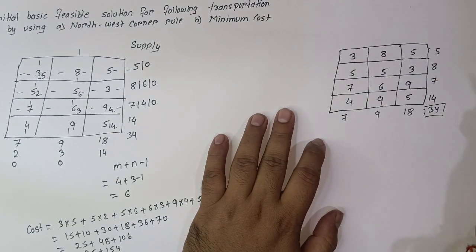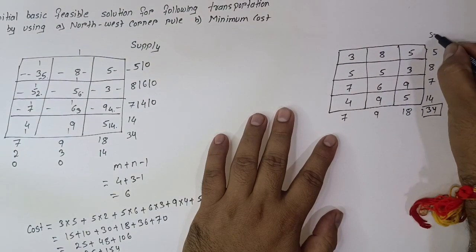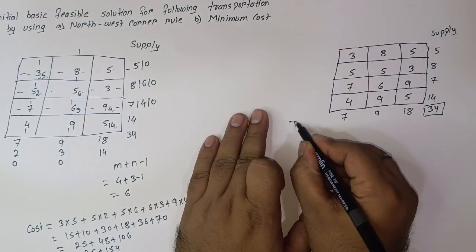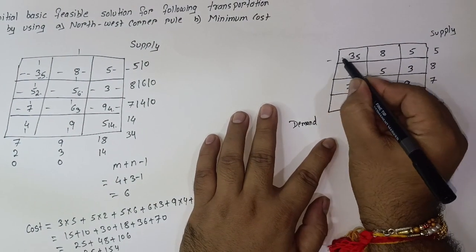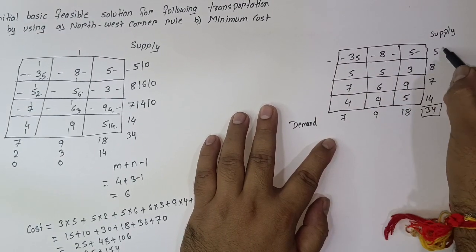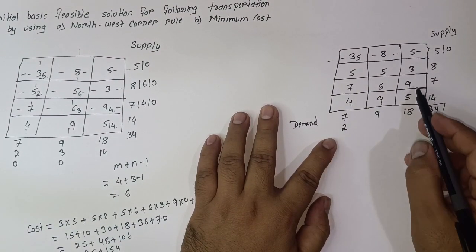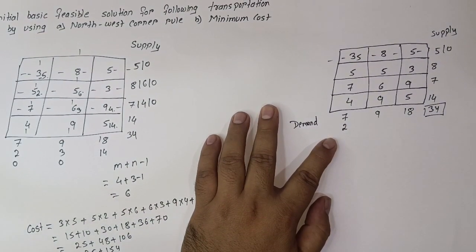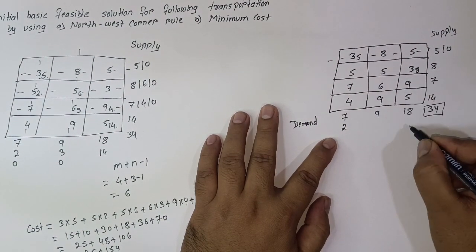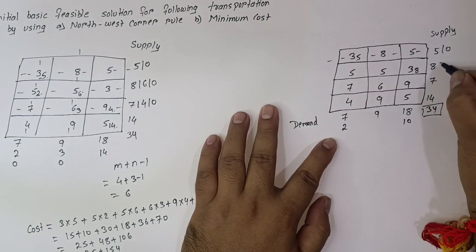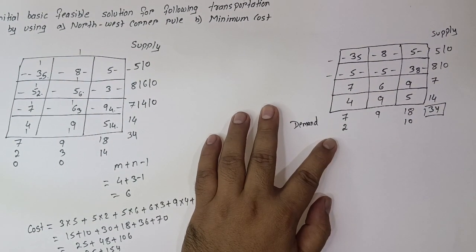We select one of the cells with value 3. We allocate the minimum of supply and demand: the minimum is 5, so 5 is allocated here. We cancel this row as supply is exhausted; demand becomes 2. The next minimum value among available cells is 3 again. We allocate the minimum of 8 and 18 to that cell, so 8 is allocated. Demand becomes 10 and supply is exhausted, so we cancel this row.